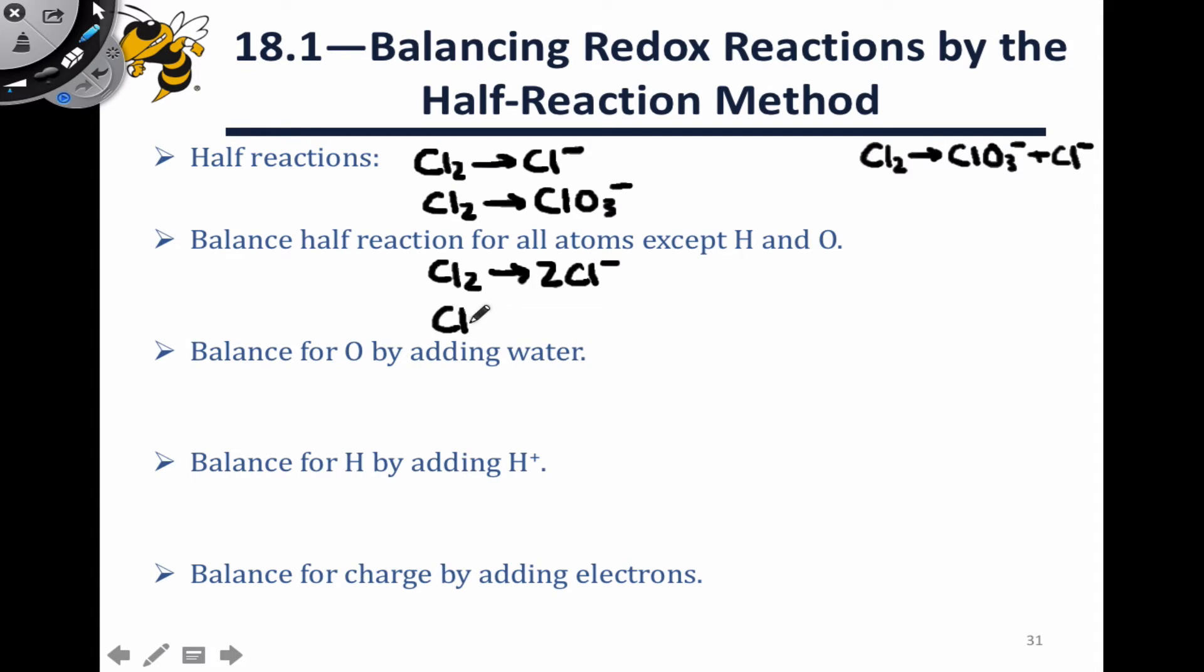In the lower reaction, we have two chlorines on the left-hand side, and so we need two ClO3- anions on the right-hand side.